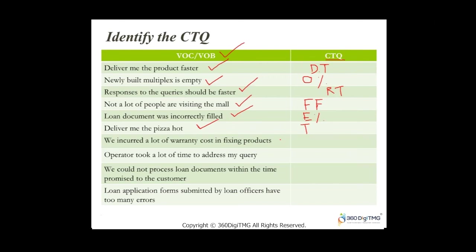If it's extremely hot and the customer burns their tongue, they'll be unhappy. 'We incurred a lot of warranty cost in fixing products' — I'd look into cost of poor quality, cost of failure — that would be the metric I try to reduce. 'Operator took a lot of time to address my query' — wait time; I'd reduce that. 'We could not process loan documents within the time promised' — resolution time or processing time; try to reduce that as well.